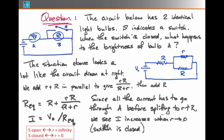And current decreases when little r goes to infinity, or the switch is open. Therefore, when we close the switch, we expect light bulb A to brighten.